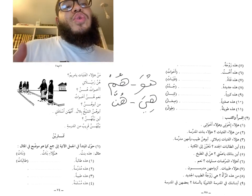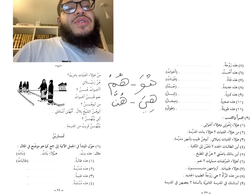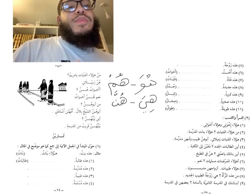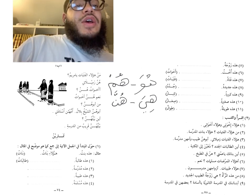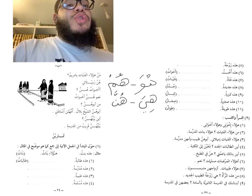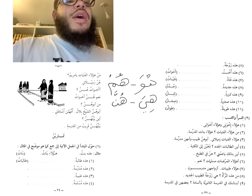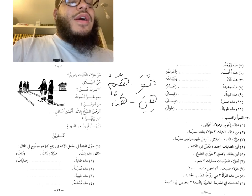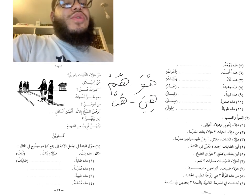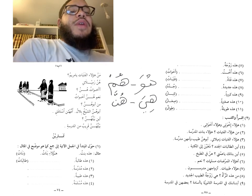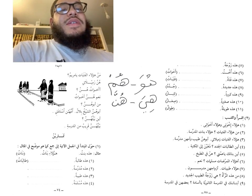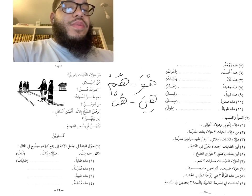Now you can see how everything we learned previously applies. Baytuhu was his house, baytuhaa was her house. Now it becomes baytuhum — their house — or بيتهن baytuhun, meaning their house for the feminine plural. So baytuhun قريب من المدرسة — this is the usage of the plural pronoun.